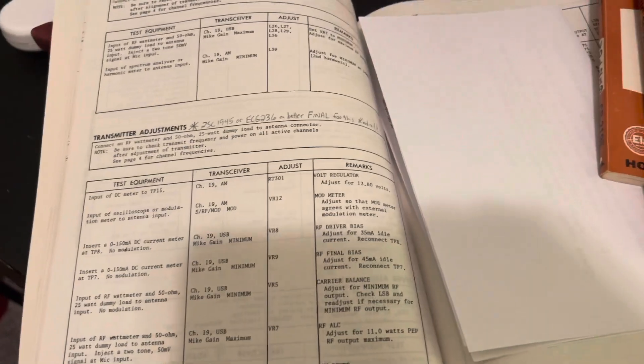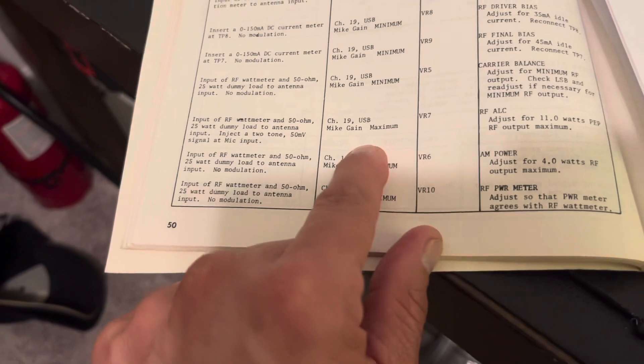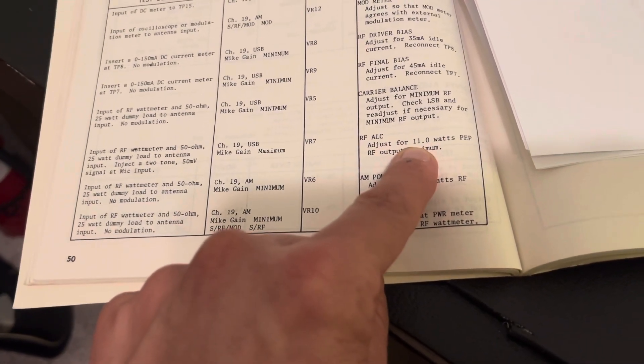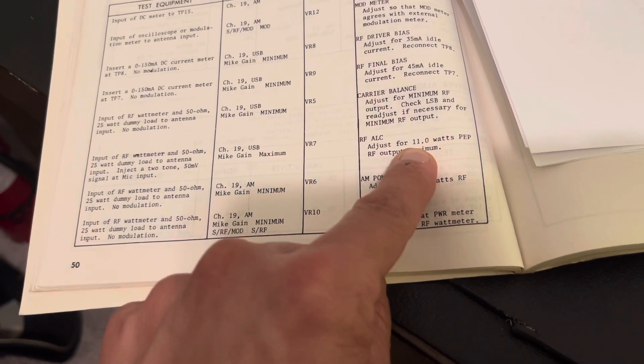Let's take a look at President Washington, Union Washington, same thing. Channel 19 upper sideband, ALC, 11 watts PEP, 11 watts peak.